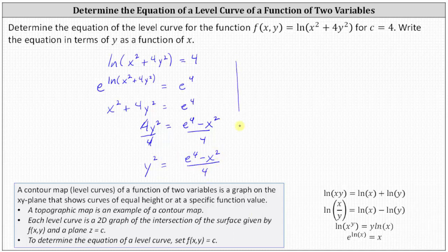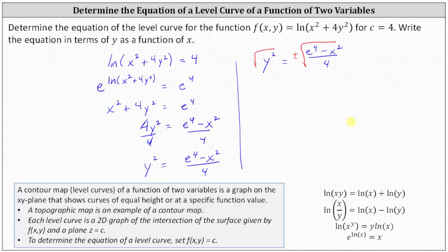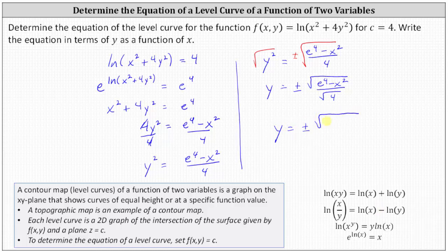Now to solve for y, we take the square root of both sides. Remember when doing this, we need to include a plus or minus on the right. The square root of y² is y, and the square root of a fraction equals the square root of the numerator divided by the square root of the denominator. The square root of four simplifies to two, so our final equation is y = ± √(e⁴ - x²) / 2.